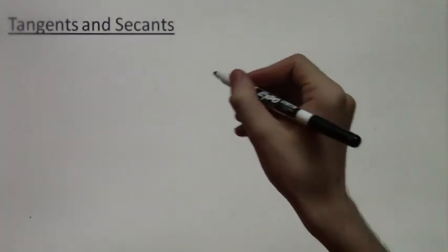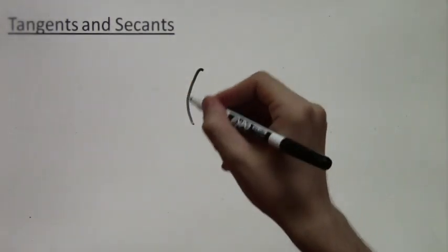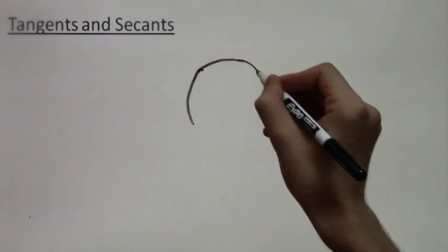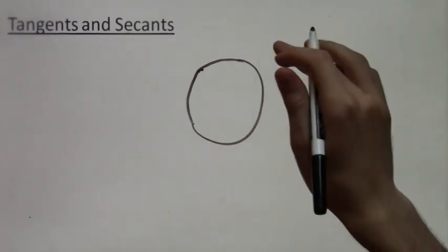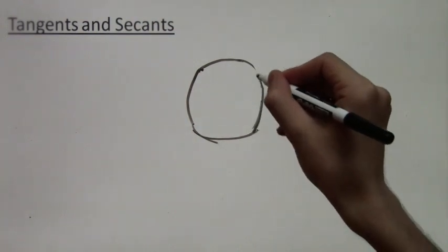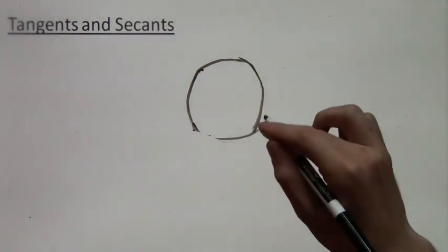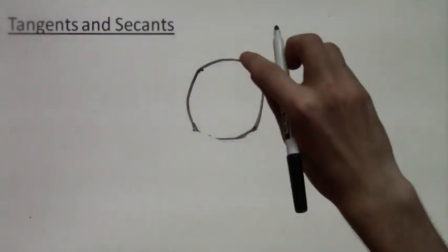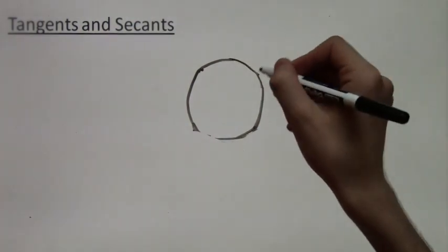In this video lesson, we will learn about tangents and secants, specifically tangents that intersect secants outside of the circle. This video is actually very similar to the intersecting secants and intersecting chords. It's the last of the three.